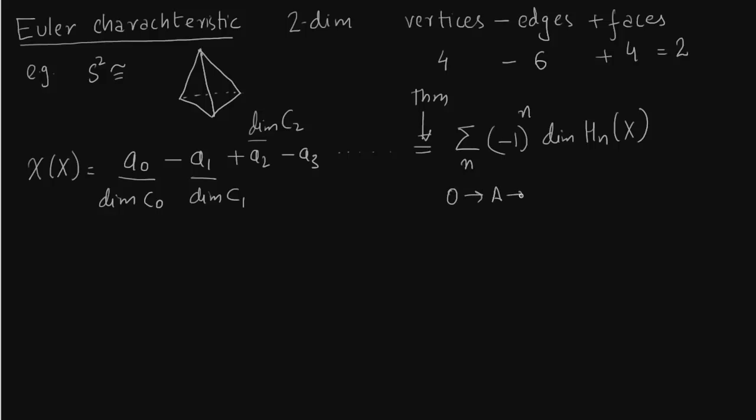So the important result we will use is this. So if you have an exact sequence like this of A, B, C, then dimension of B equals dimension of A plus dimension of C. So you can write this as dimension or rank.